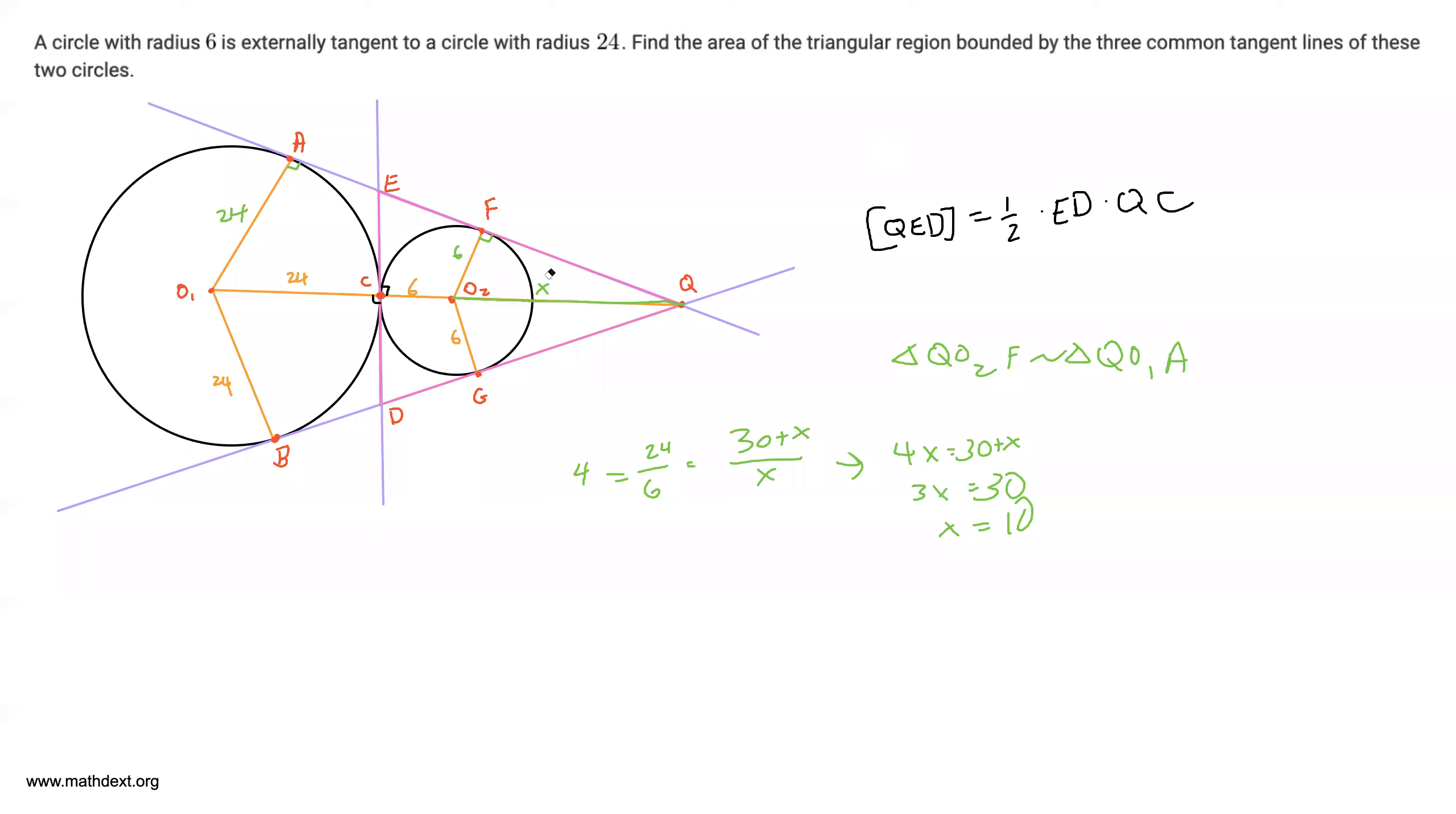So we have our x is equal to 10, and what does that mean? It means that QC is 10 plus 6, which is 16.